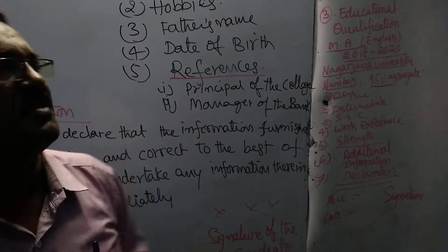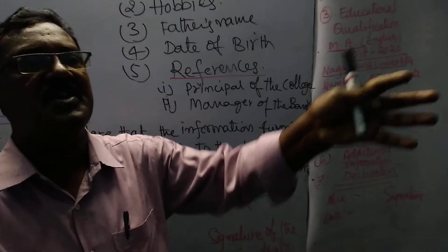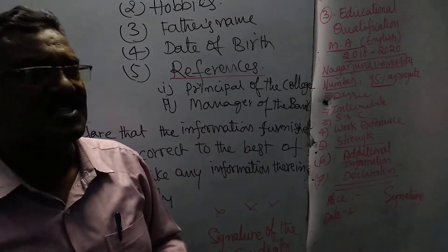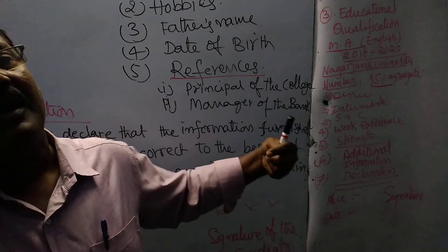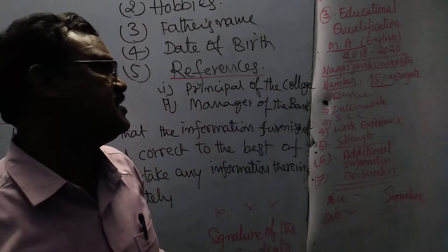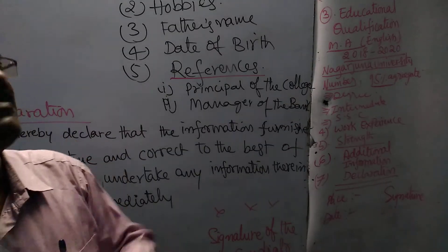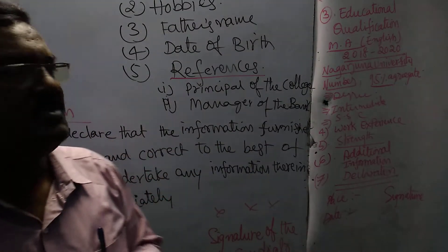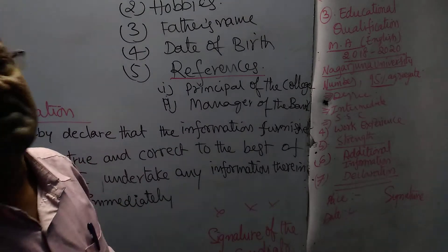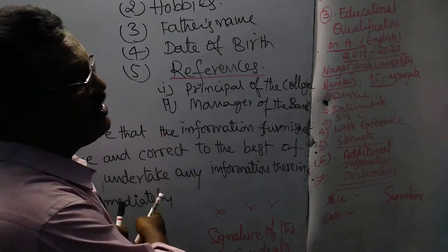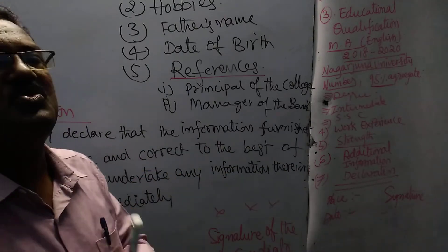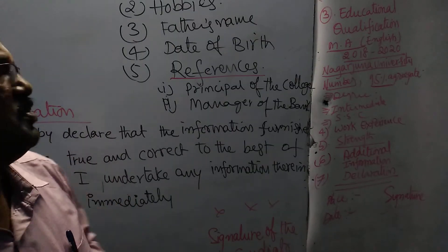Resume means brief information; curriculum vitae means elaborate information. That means here, whatever the experience, in a detailed manner — in which company, in which year, what are the awards and accomplishments you got — in an elaborate manner you can extend that information with many sentences. But resume means brief information you have to give. CV means course of your life, complete information. Resume means brief information. Curriculum vitae: minimum two pages, more than two pages you have to write. Resume means maximum two pages, minimum one page.